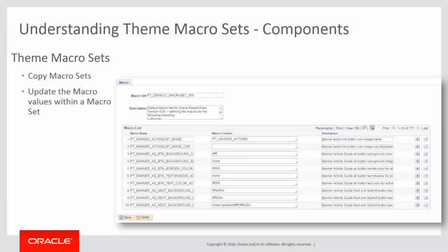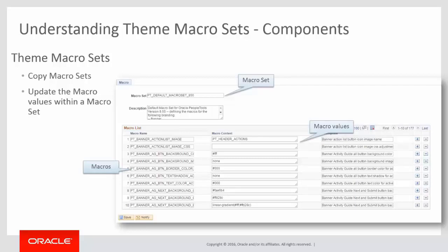Let's look at the components used to clone and change a macroset. We recommend using the delivered macroset, cloning it, and then changing it — updating the macroset name and description. You can see there are a large number of macros in the macroset, and the macro values are the colors, logos, and things you can change. There's also a description field to help you determine which macros and values you want to change. Note that there are 177 macros in the set, so in many cases you won't want to change most of them — you'll just be changing a few and accepting the defaults for many others. You can also export this grid to Excel to help with the analysis of which macros you want to change.